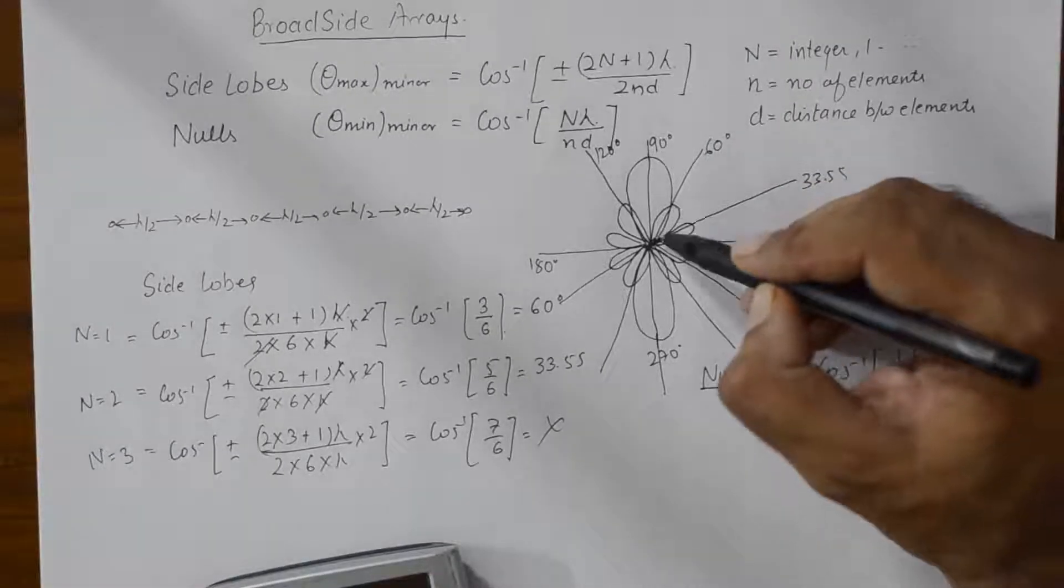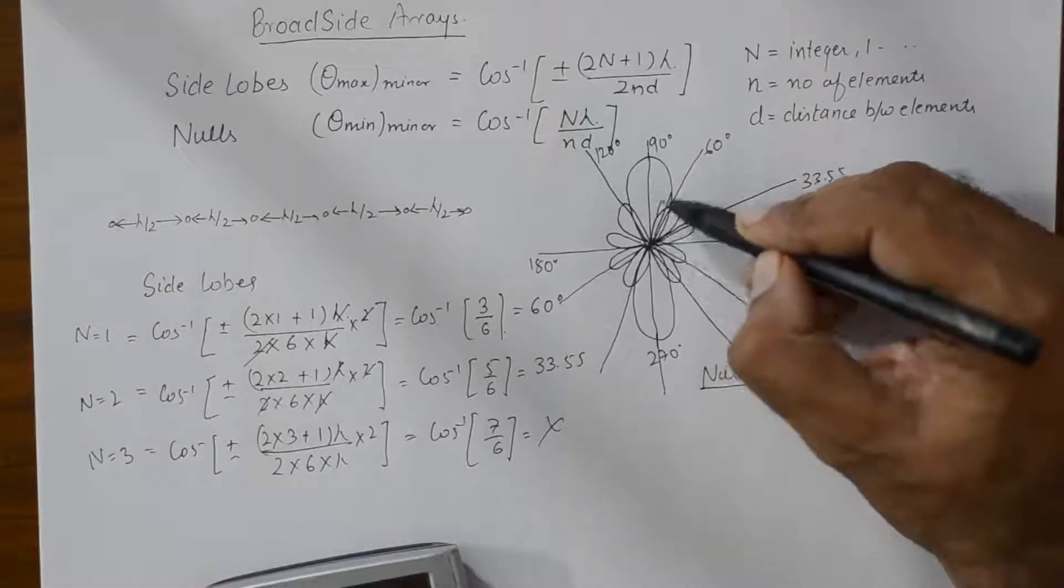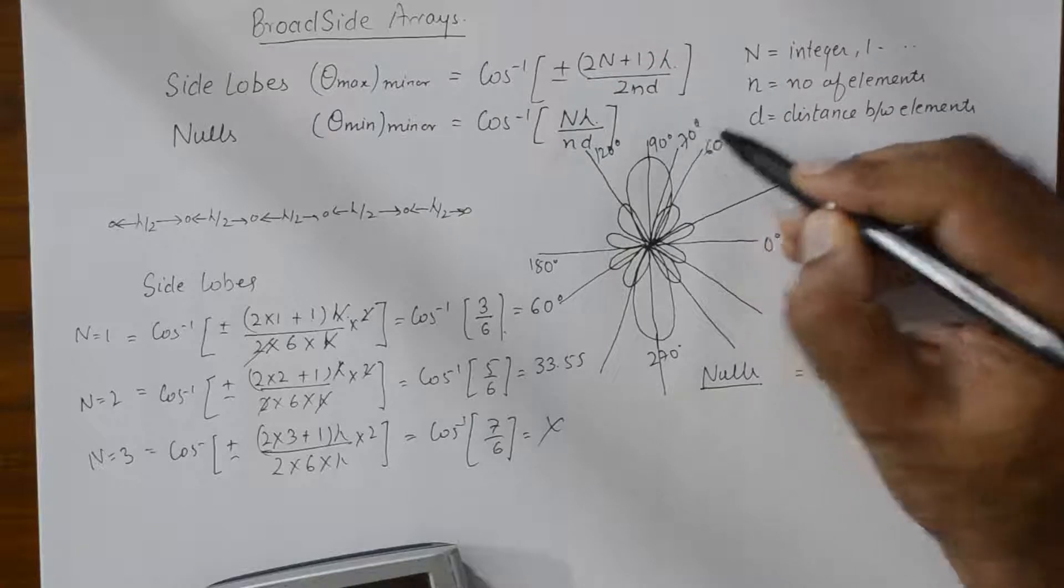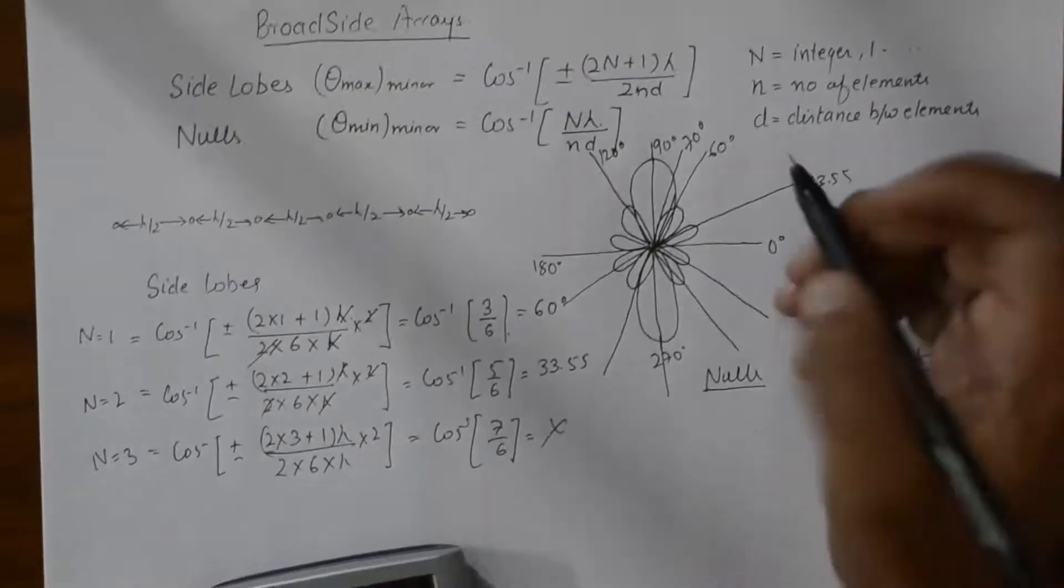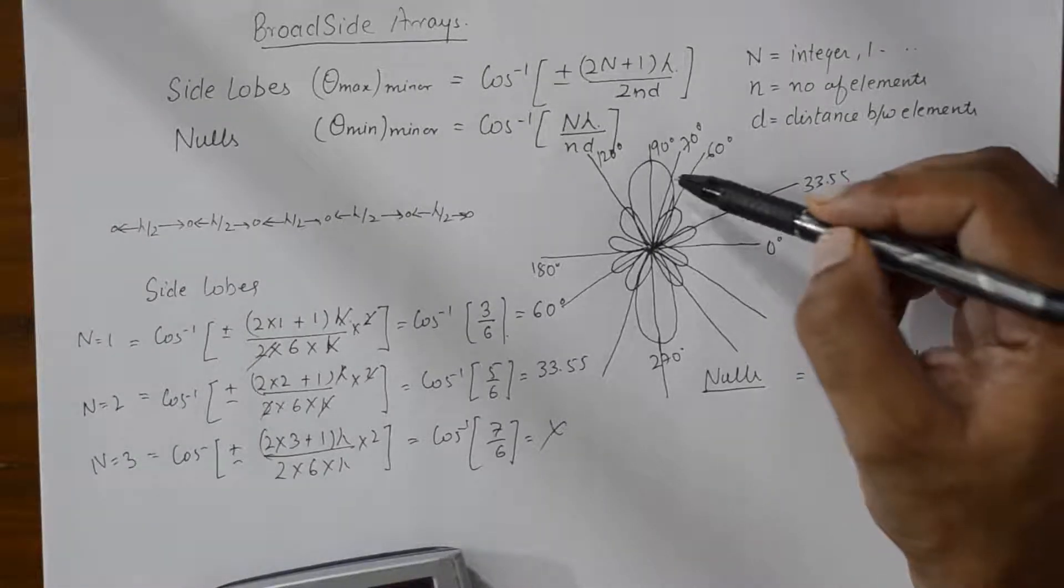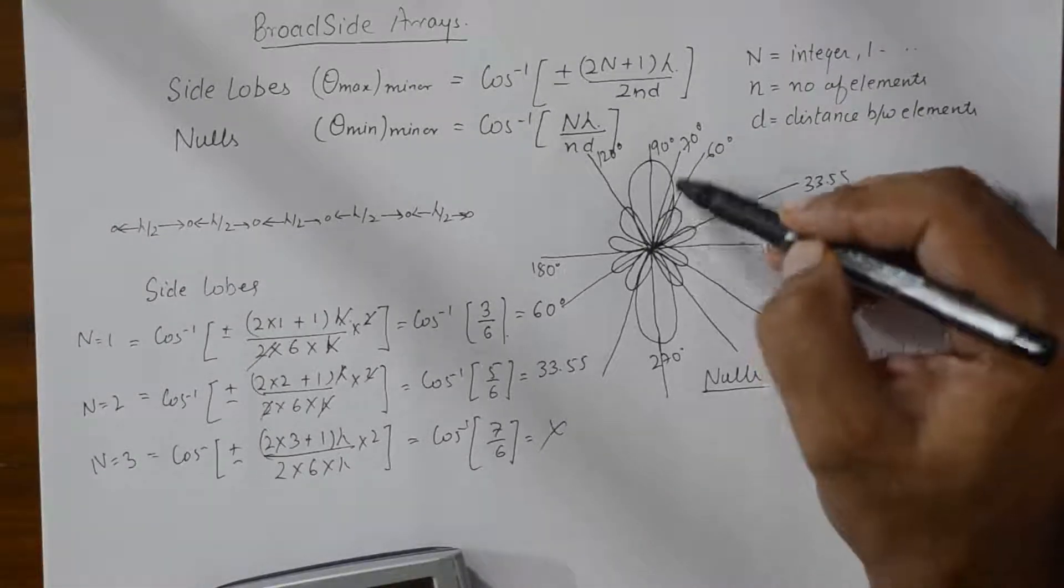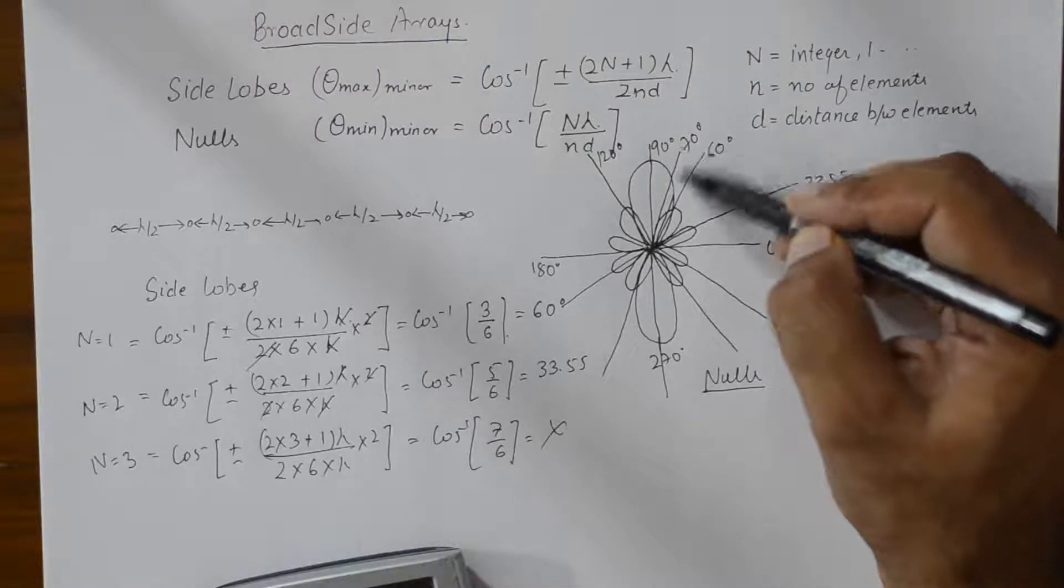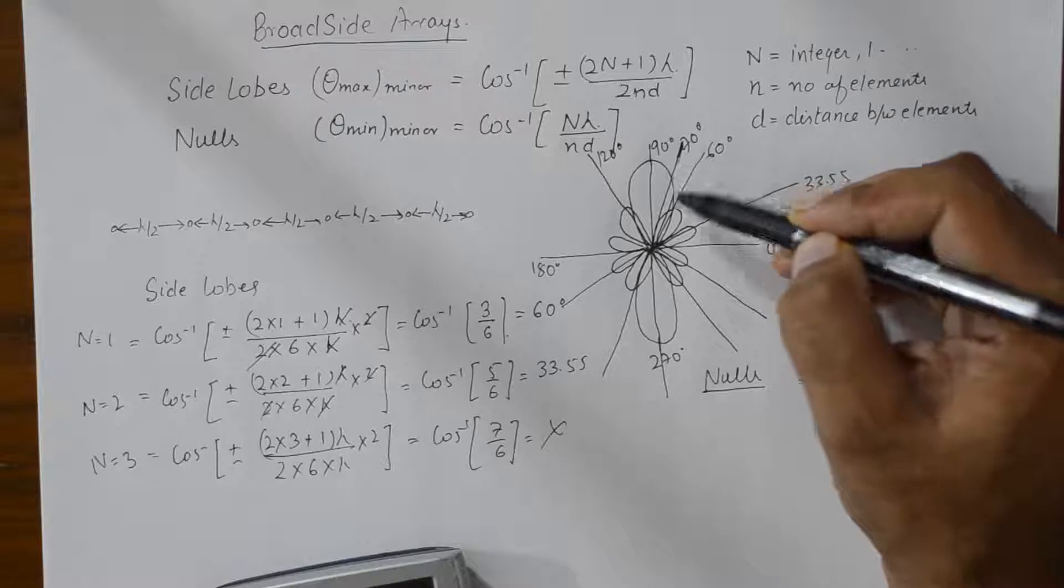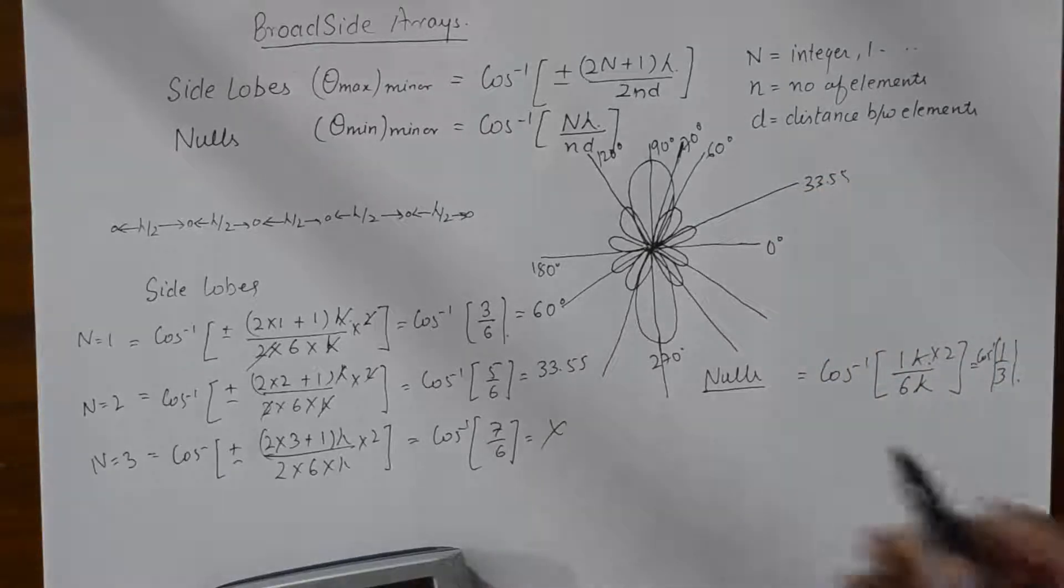So, this tells you that at 70 degrees you will find a null. So, you now understand that your main lobe will be restricted to 70 degrees in the first quadrant and so on.